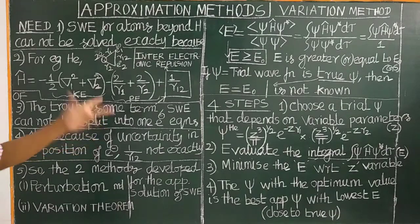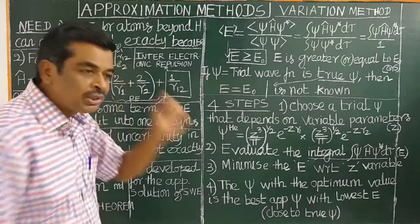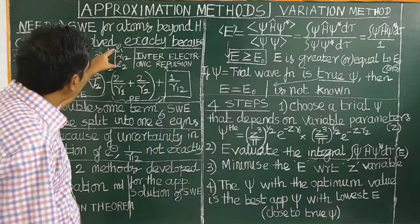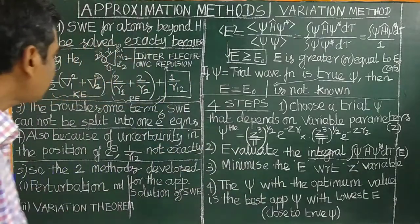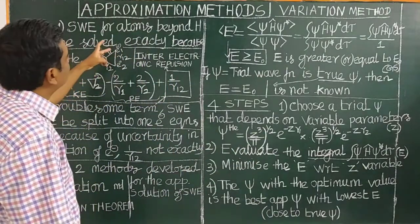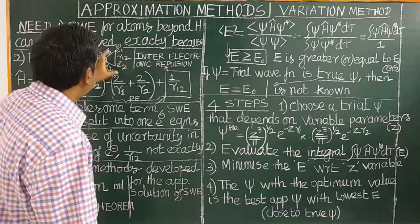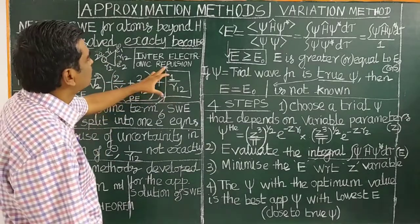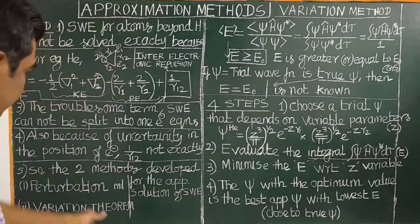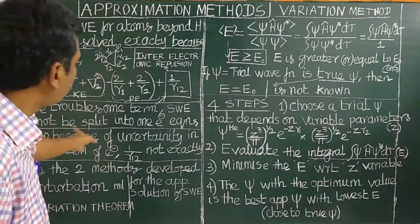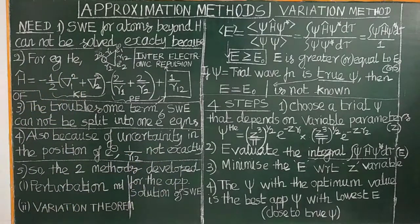Also, because of the uncertainty in the position of the electron, the distance between electron 1 and electron 2 cannot be known accurately. Therefore, two methods have been developed to solve the Schrödinger wave equation approximately.